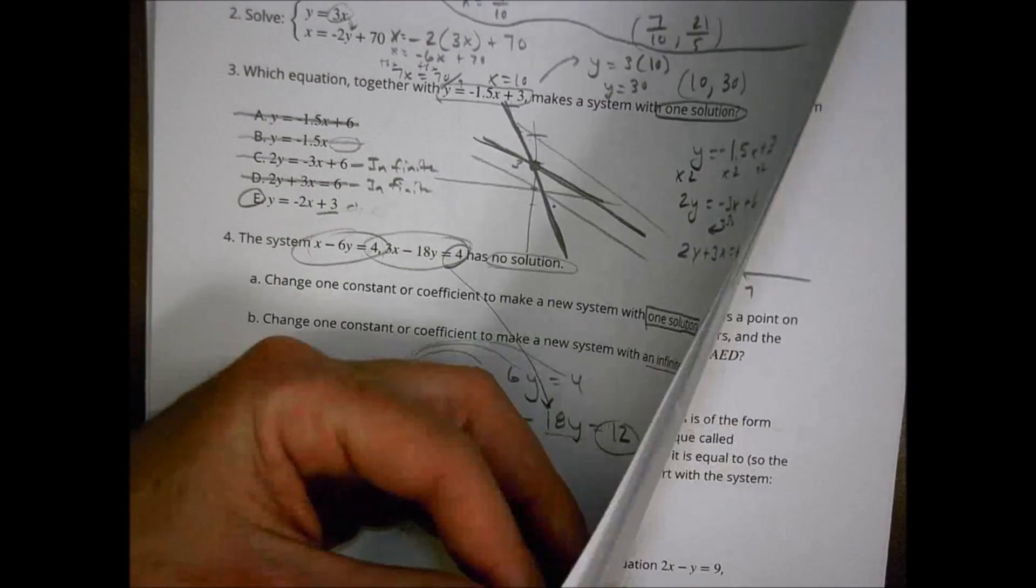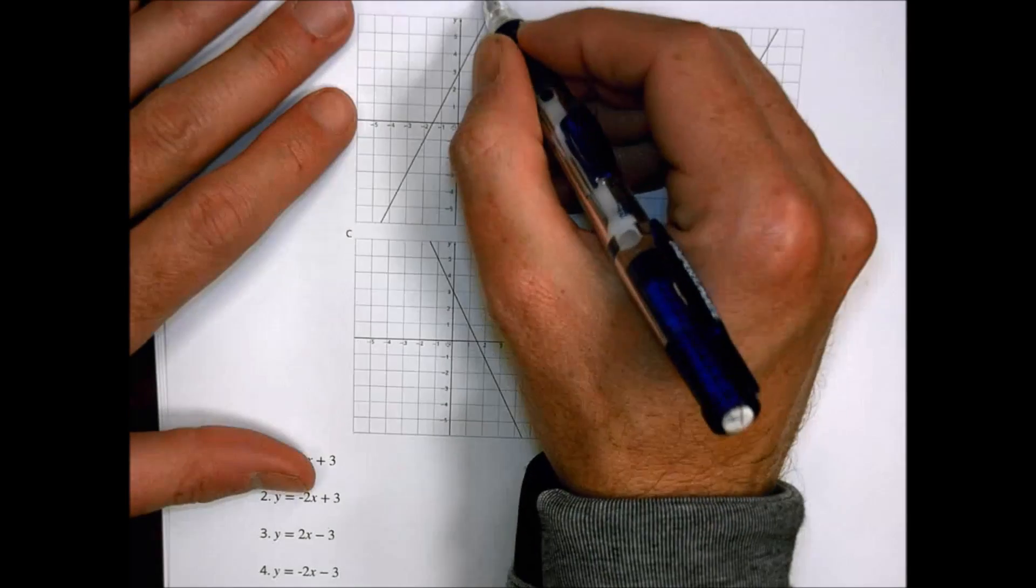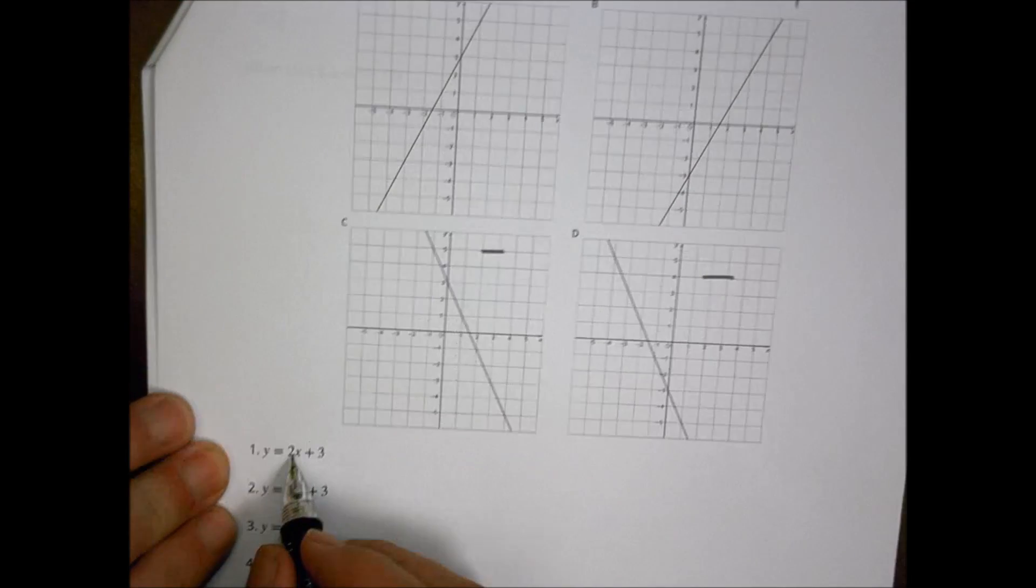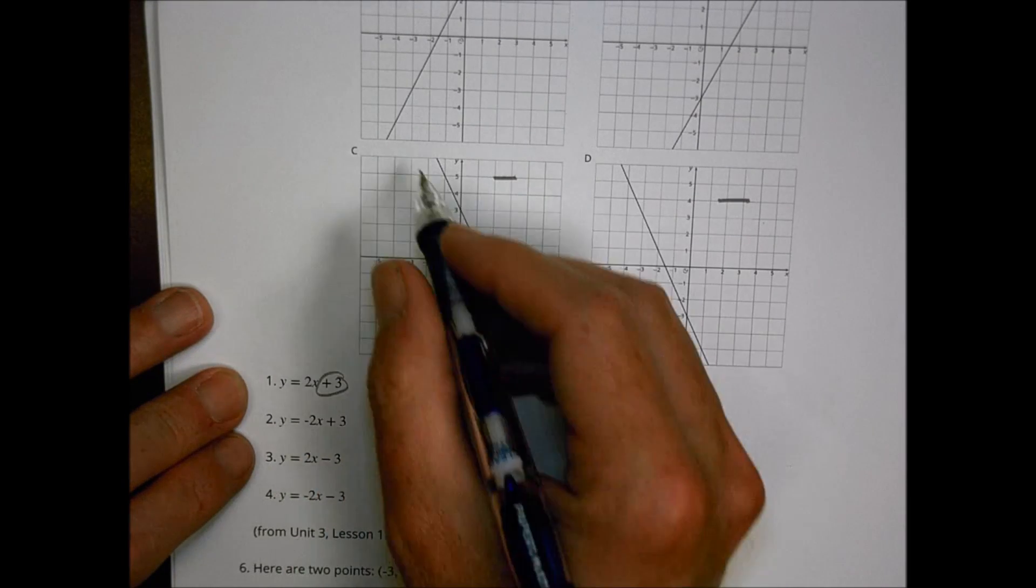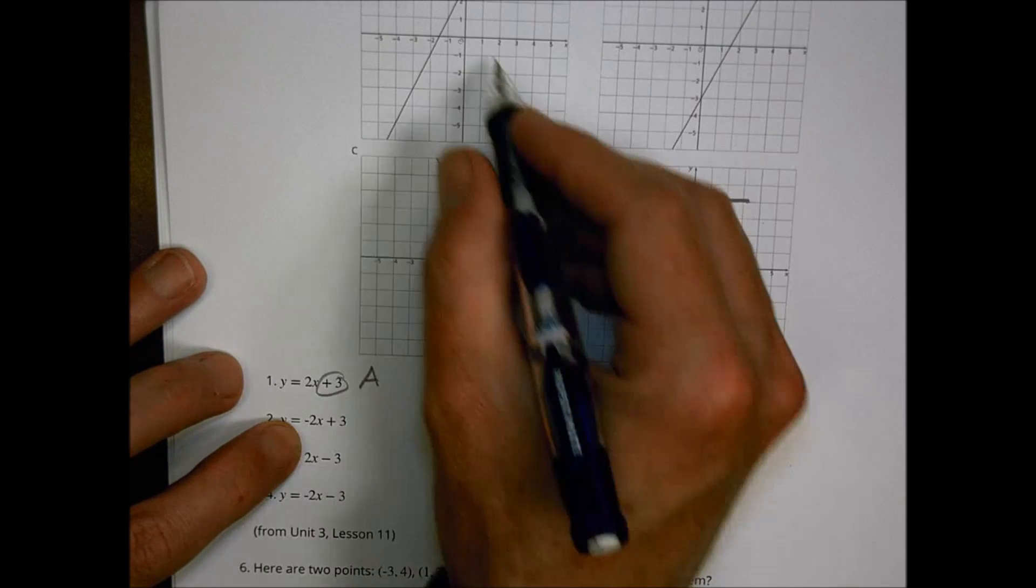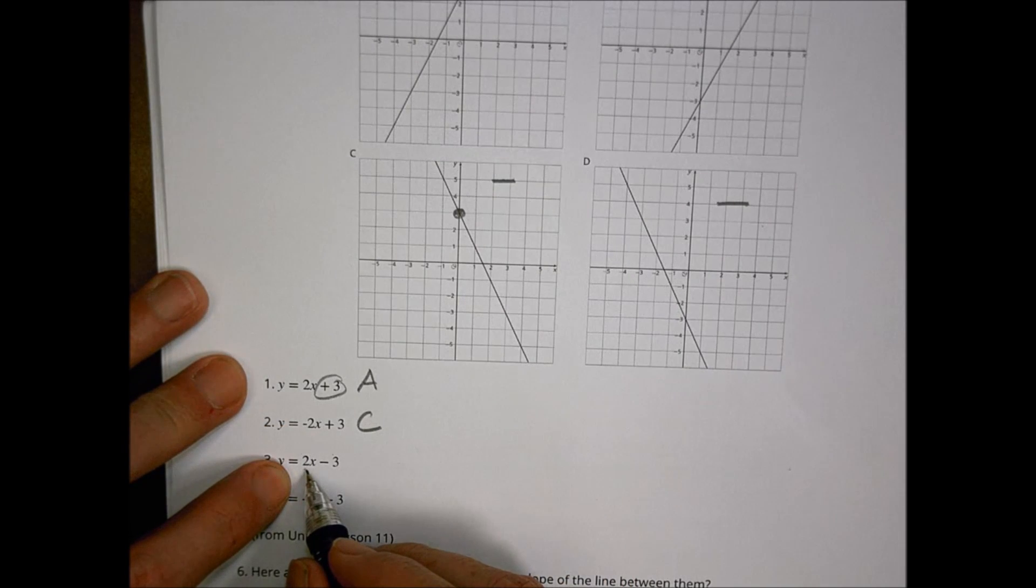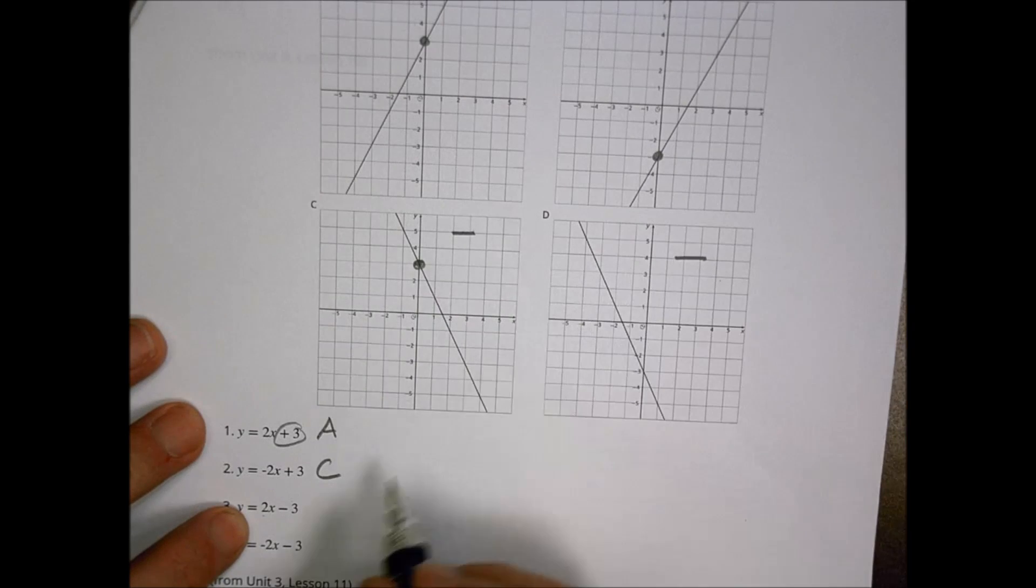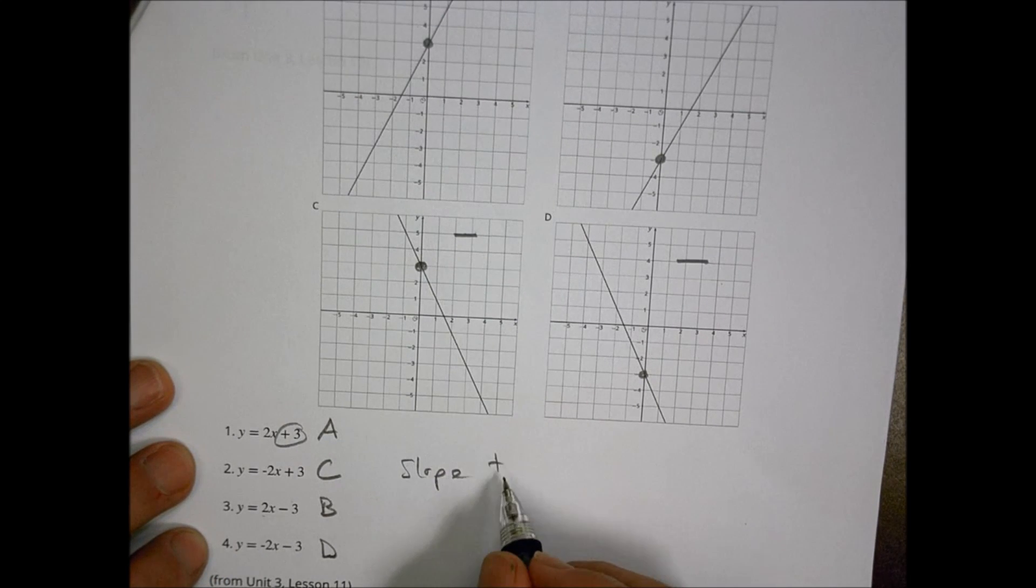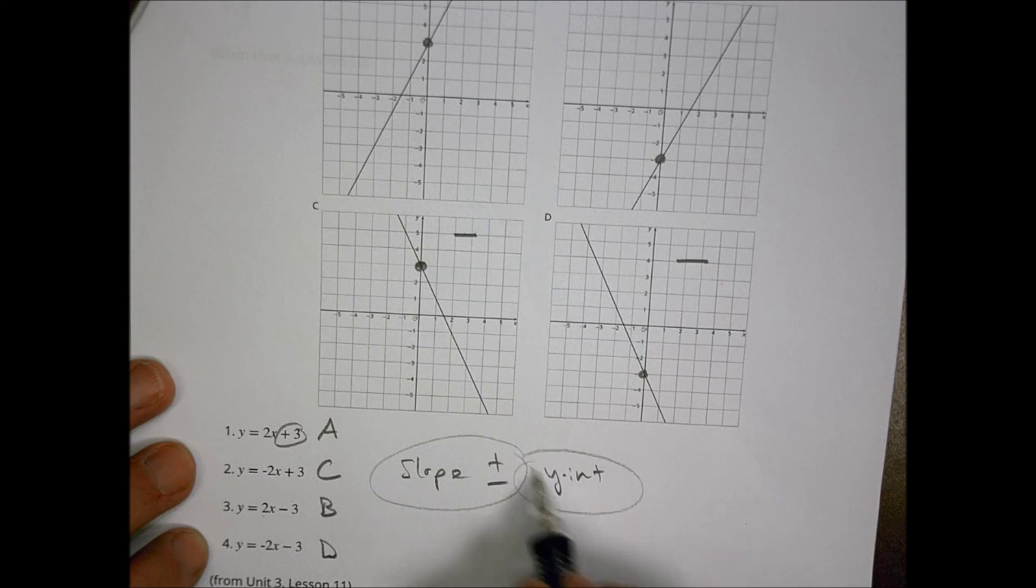Number five, match the graph to the equation that we have here. A couple things I noticed. This is a positive one going up. This is a positive one. This is a negative one. This one is also a negative one. Here's a positive. I have 2x plus 3. So, going up and crossing at 3 looks like it's going to be there at A. This is a negative one crossing at 3. So I look for a negative one. This one crosses at 3. So that's going to be C. Here's positive. 2x crossing at negative 3, which is right there. So that's going to be B. And here's negative crossing at negative 3. That's going to be D right there. So look at your slope. Is it positive? Is it negative? And then look at your y-intercept to decide where it crosses. Those are the two key things you have to do.